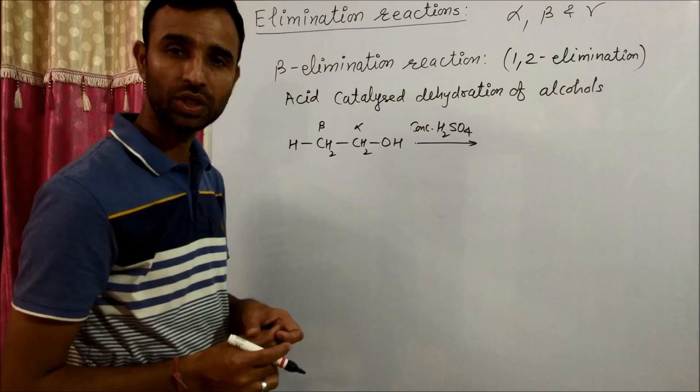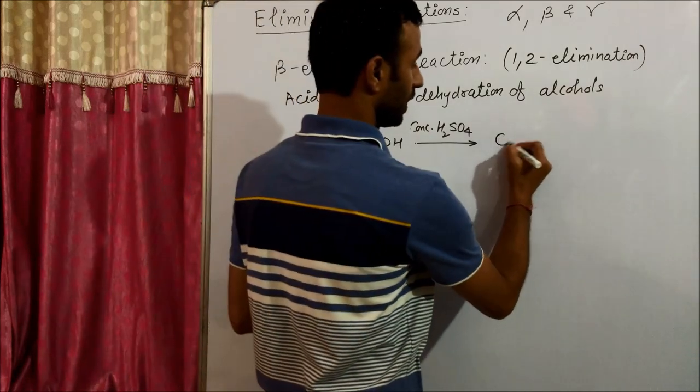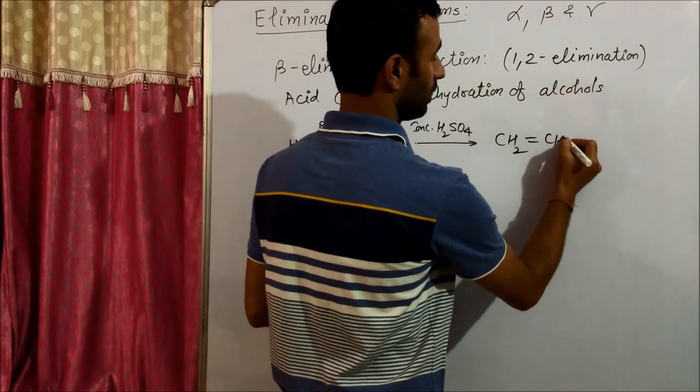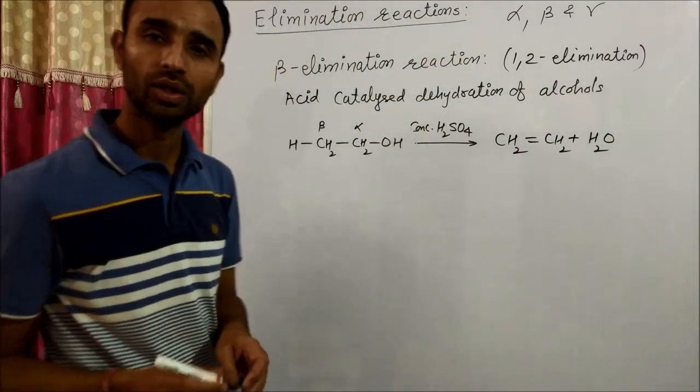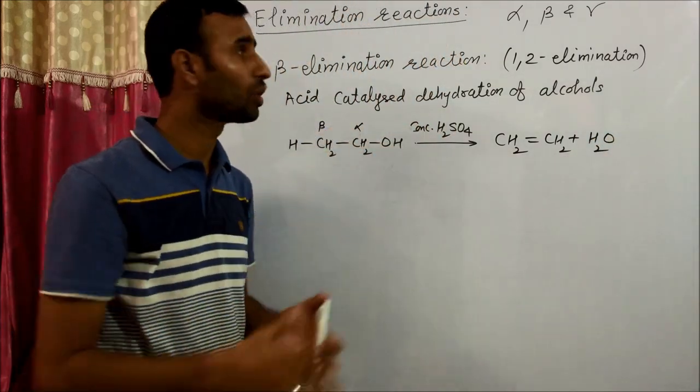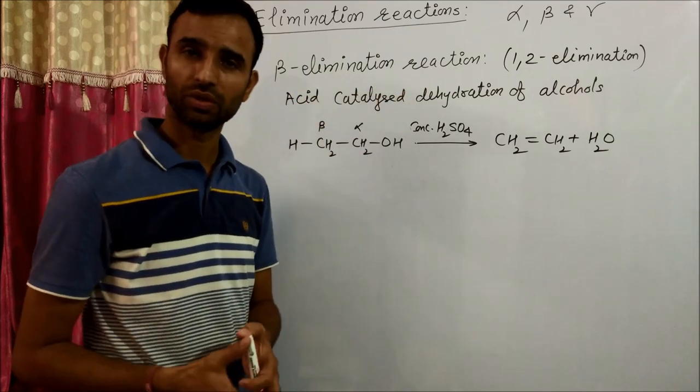It is again beta elimination reaction, and we get ethene plus H2O. So these are common examples of beta elimination reaction.